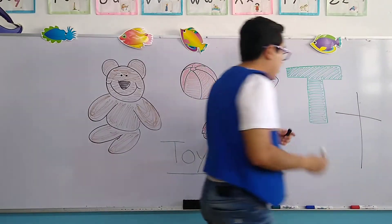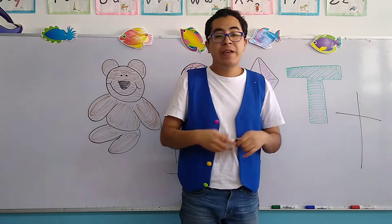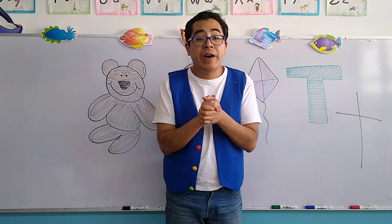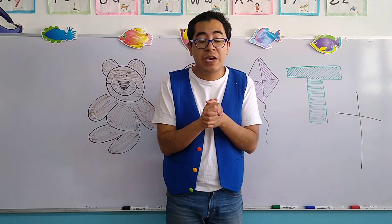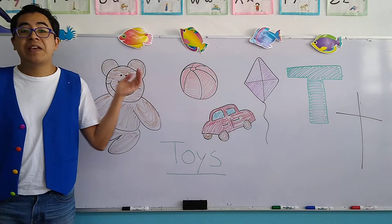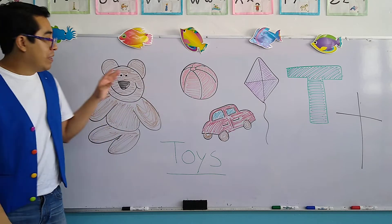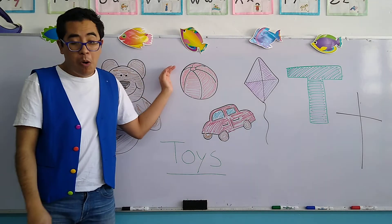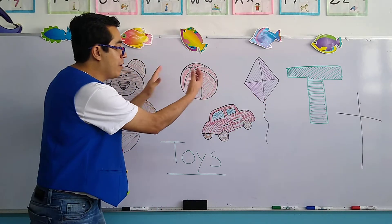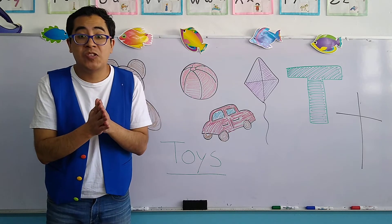Small t is like a cross. Now, what objects can we find with the letter T? I'm going to show you. These are some of the objects that we can use with the letter T. The bear, the ball, the car, and the kite — all of them together, they are part of the family of toys.